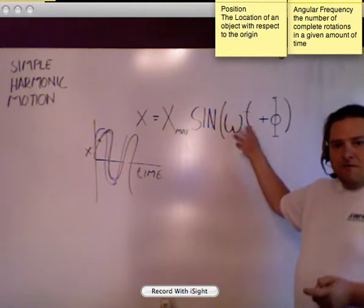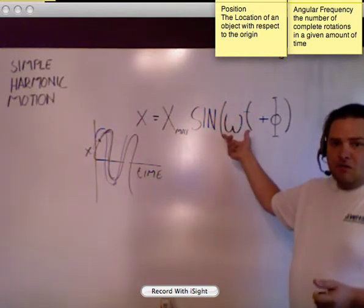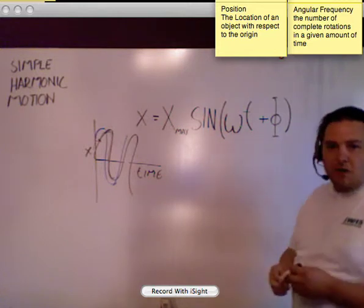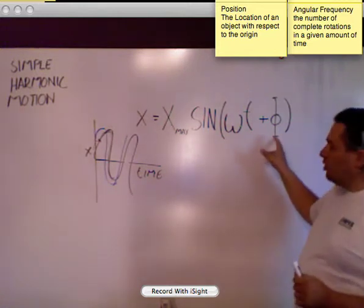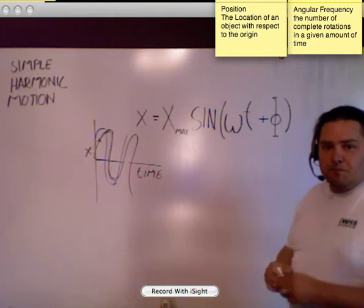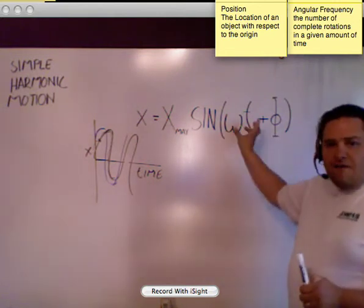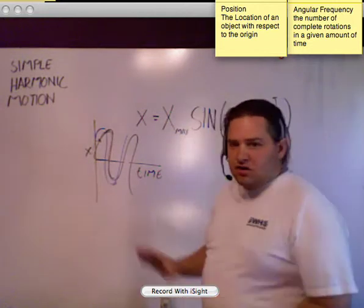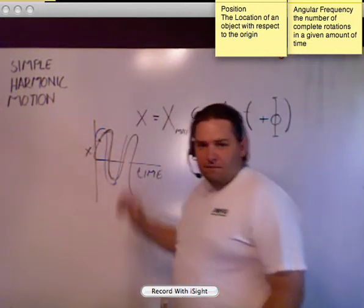And because we want it to be unitless because this is radians per second, we need to get rid of that per second. So I'm multiplying it by T. And then I'm bringing in this phi, P-H-I, to bring in a phase shift that allows me to move this graph to any point to shift it this way or that way. Okay?